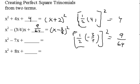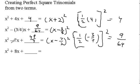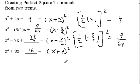For x squared plus eight x, one-half of eight is four, and four squared is sixteen. This gives me x plus four, quantity squared — the sign must be plus because the second term is plus; notice these signs always match. This process is called completing the square. Note that the coefficient of x squared must always be one for this completing the square method to work.